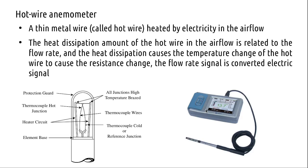The hot wire anemometer falls under thermal anemometers. Basically, there is a wire at the probe tip that is heated. The tip is shown magnified, where a wire contact is present and a heater circuit heats it. There is also a thermocouple to measure temperature and a reference junction. This is a very fragile piece of equipment — some versions have a protective arrangement while others are directly exposed.